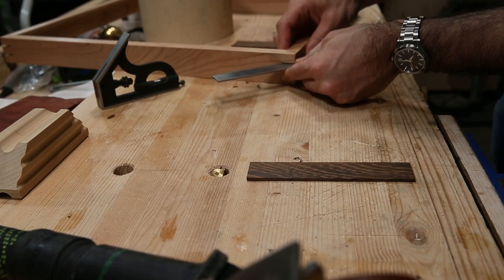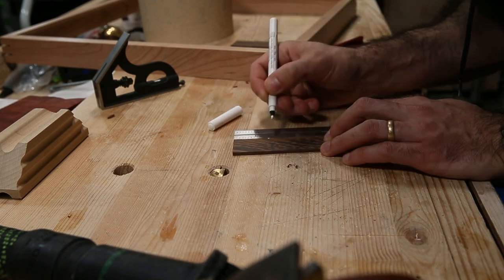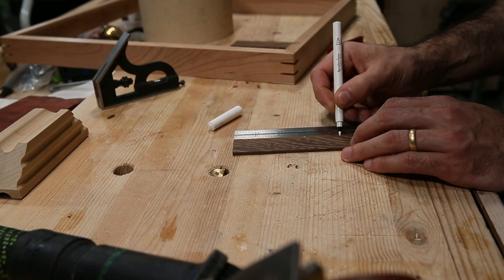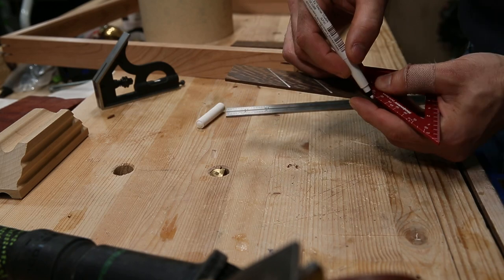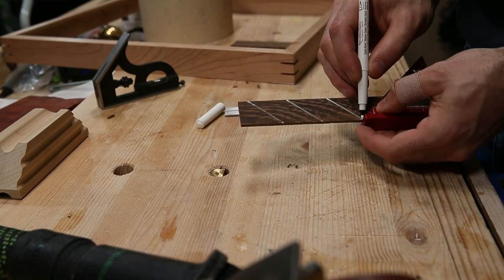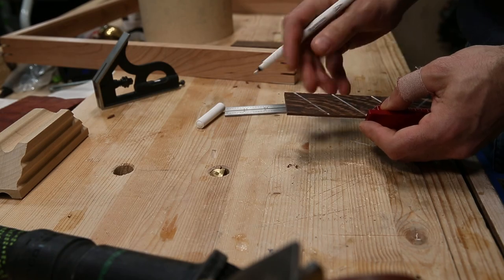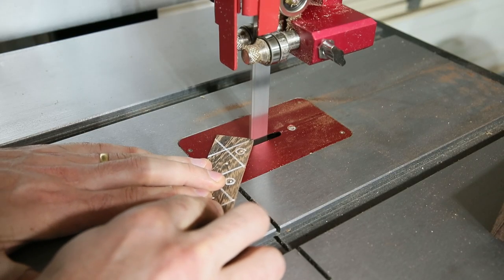And then I'll measure how big I need these splines to be. And I want them to be a little oversized. So I'll mark out my splines to go cut. And I'll bring it over to the bandsaw.